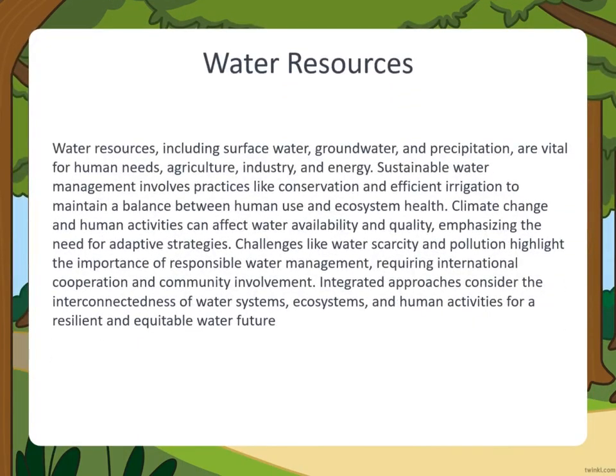Then we have water resources. Water resources include surface water, groundwater, and precipitation, and are vital for human needs, agriculture, industry, and energy. Sustainable water management involves practices like conservation and efficient irrigation to maintain a balance between human use and ecosystem health.